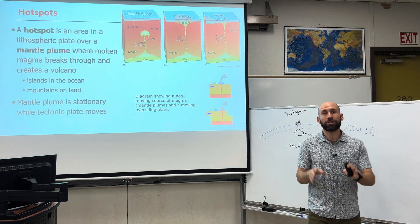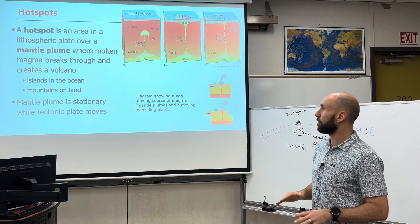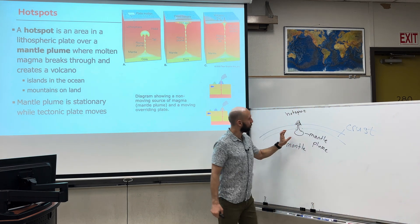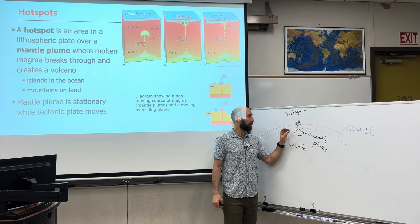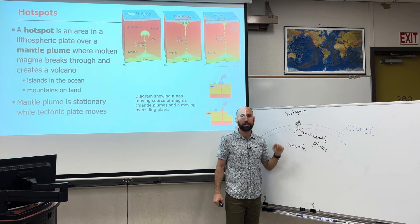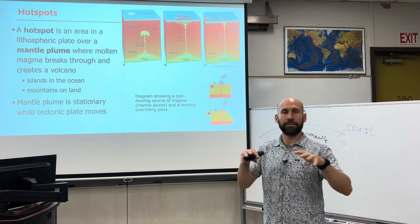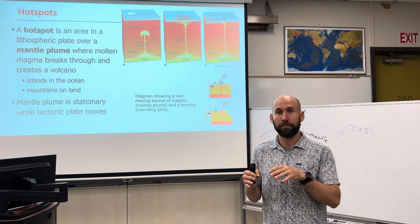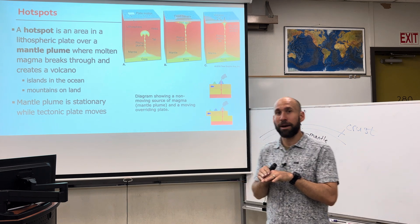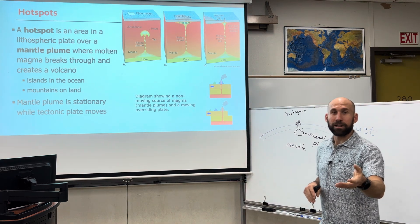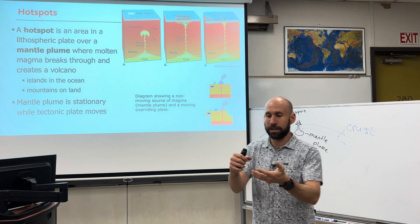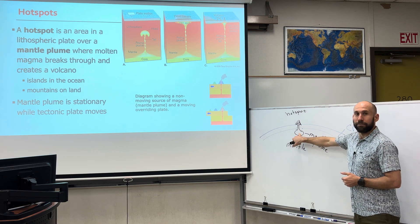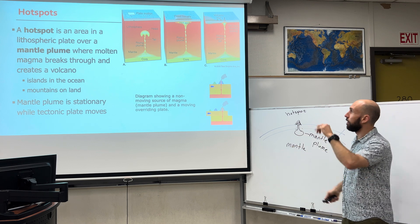Hotspots are volcanoes that are not associated with plate tectonics — all other volcanoes are going to be, but sometimes they're not. The mantle plume remains stationary while the overriding plate moves across the surface of the Earth. This is the concept of plate tectonics: the surface of the Earth is covered by large, rigid bodies of rock that move relative to one another, and where they meet is a plate tectonic boundary. The product of plate tectonic boundaries are earthquakes, volcanoes, mountains, and ocean basins. But we have this unique opportunity on our Earth where volcanoes form away from tectonic boundaries.